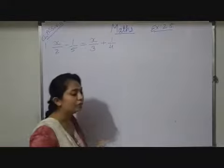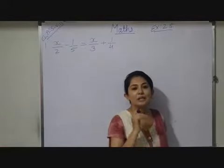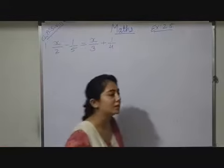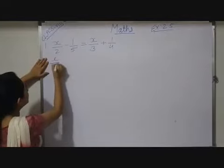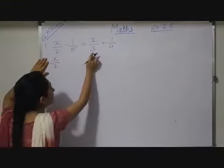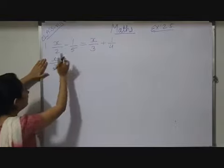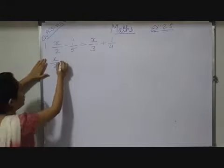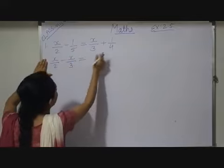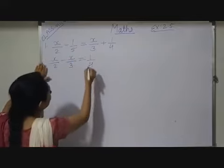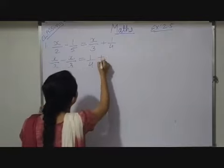Now to solve an equation what we have to do? Collect one side variables, another side numbers. So here I am shifting this one here. So x by 2, this one is positive. So while I will transpose it here, it will be with a negative sign. So x upon 3 which is equals to 1 by 4 already it was here plus 1 by 5.